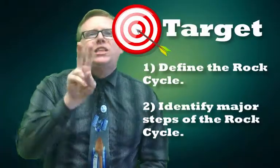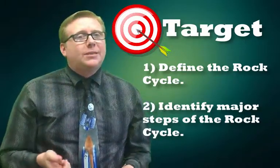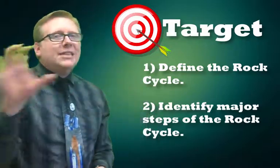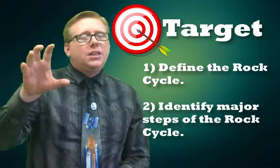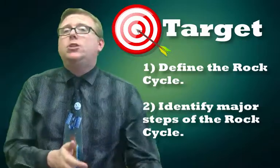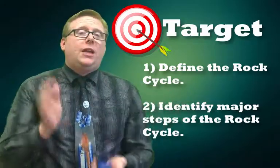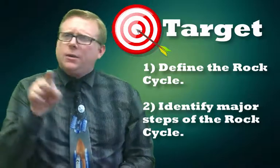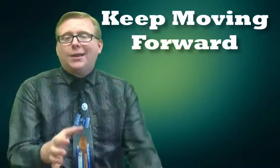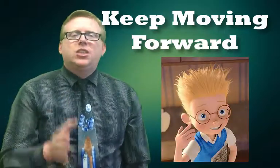So, what did we do in this video? We did two things. First, we defined the rock cycle as the process by which the earth turns one rock into another — it's recycling rocks. Then we identified the major parts: how an igneous rock can be weathered and deposited to form a sedimentary rock, which can be changed by heat and pressure into a metamorphic rock, which can then be subducted and melted, and finally cooled to form an igneous rock again. And there's a little more complexity to it than that. You can always hit pause if I'm going too fast, or go back and watch it again — just keep moving forward.